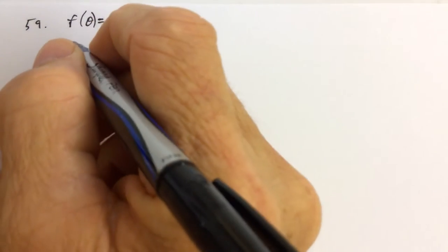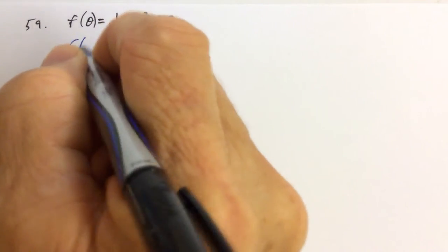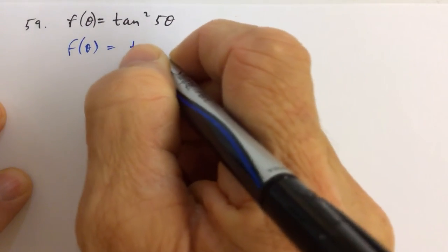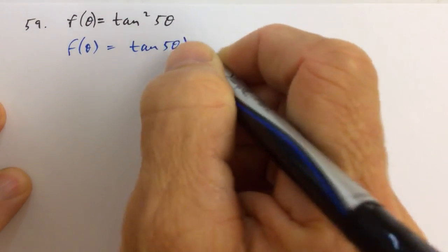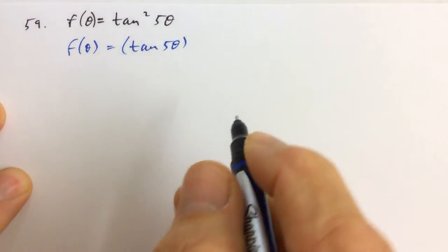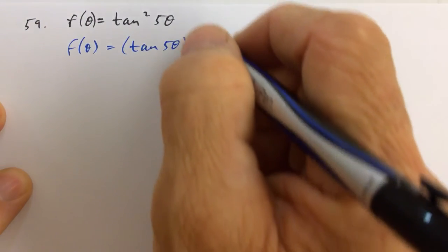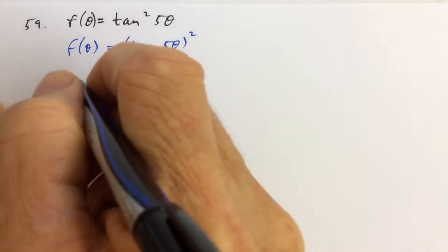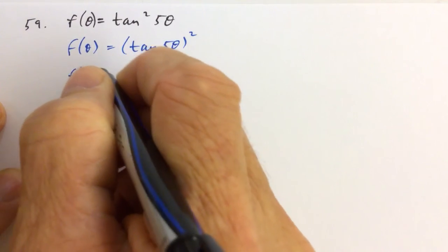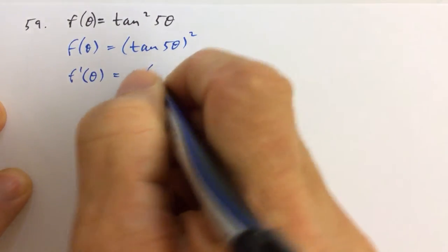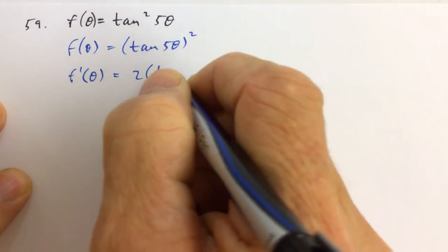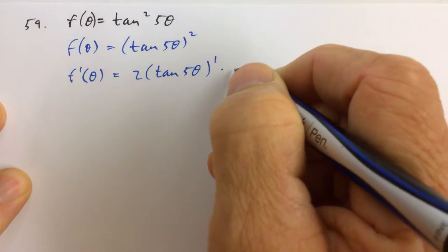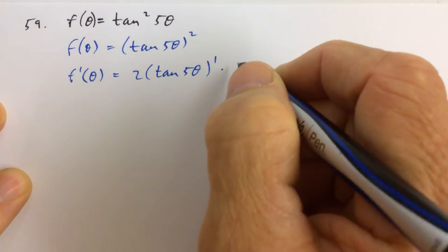For number 59, the best way to rewrite this would be — just so you can see it perhaps a little bit easier — is to write this as the tangent of something to the second power. That way we know that when we take the derivative of this function, we're going to use the power rule first: 2 times the tangent of 5θ to the first power, times the derivative of the tangent of 5θ.